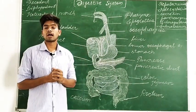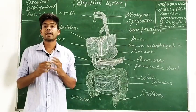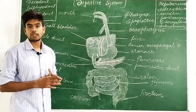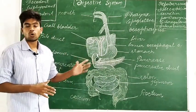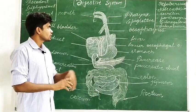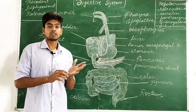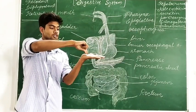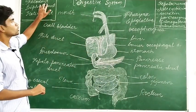The process of digestion starts when we take a morsel of food in our mouth. The mouth is the anterior opening of the alimentary canal. The mouth leads to a cavity called the oral cavity or the buccal cavity, which contains a number of teeth and a muscular tongue. Each tooth is embedded in the socket of the jaw bones — this kind of dentition is called thecodont dentition.